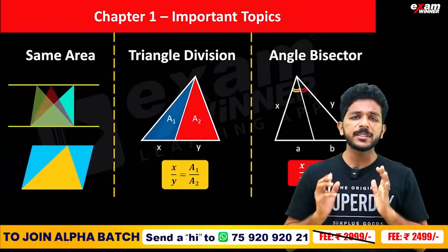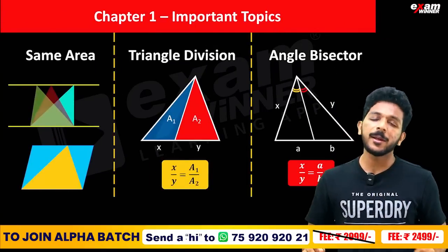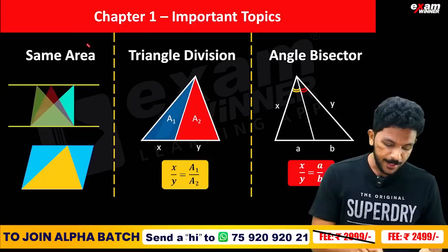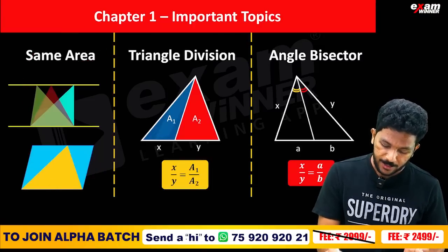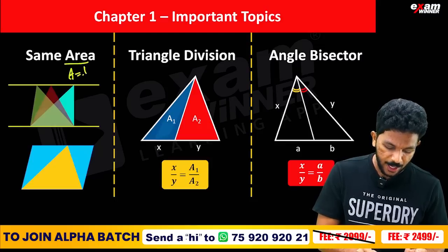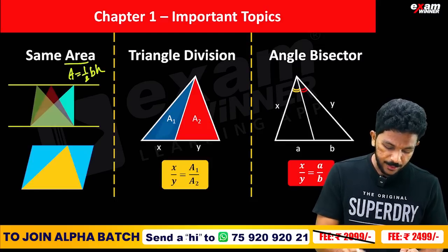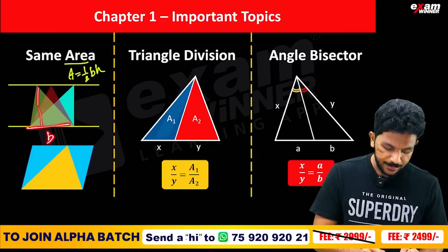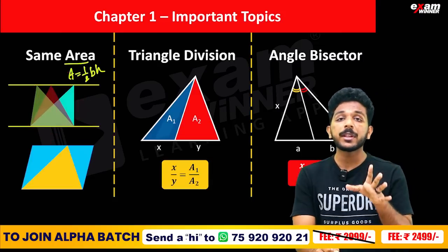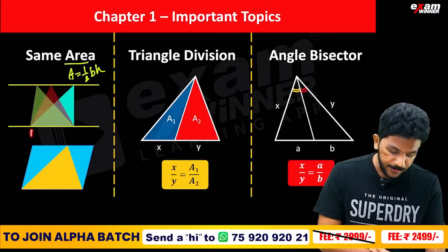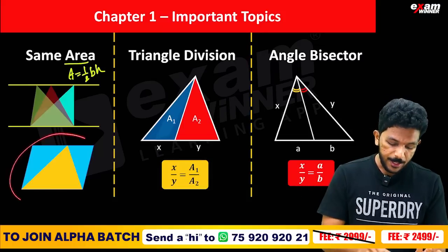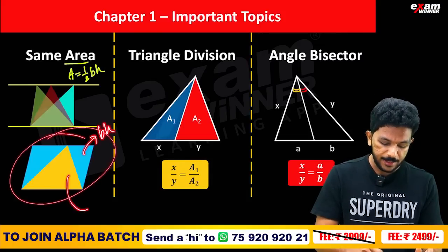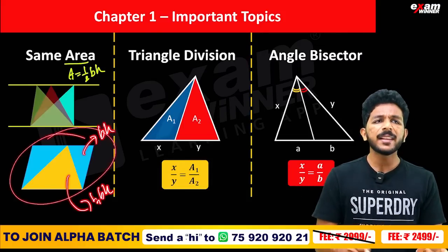Now, starting with the first chapter. The area of a triangle is ½ × B × H. Triangles on the same base or between the same parallel lines will have the same area. You might see that the base is half BH — that's very simple.